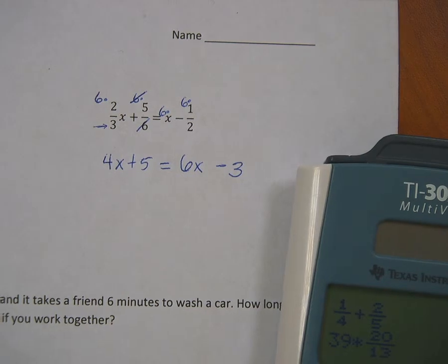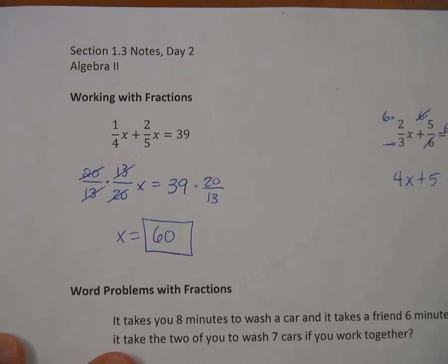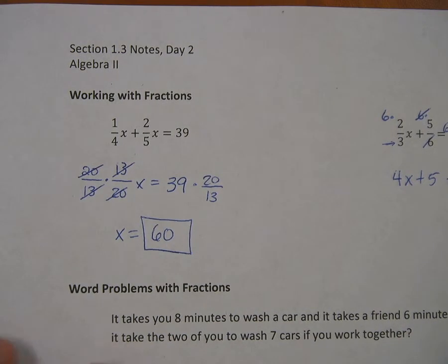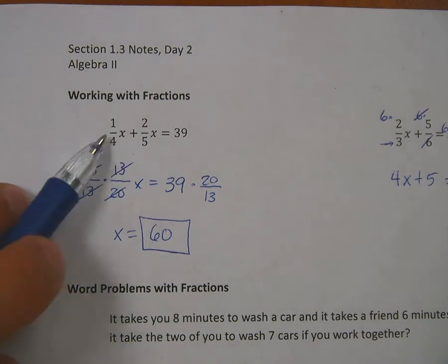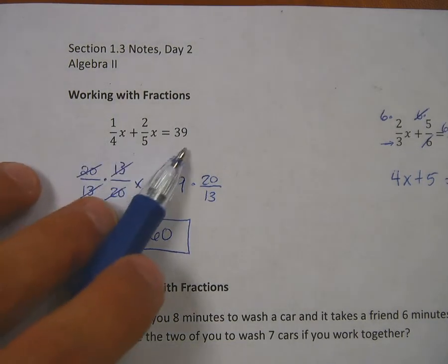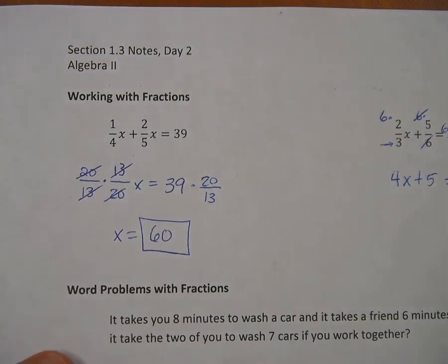And so I always like this method. We could have done the same thing over here on the first problem if I would have multiplied everything by 20. Why 20? Because 4 and 5 both go into 20. So we could have done that as a first step, 20 times this, 20 times this, 20 times this, and then I would have been working with something with no fractions. So now it's just a matter of solving the simple Algebra 1 problem.